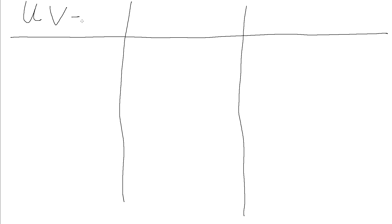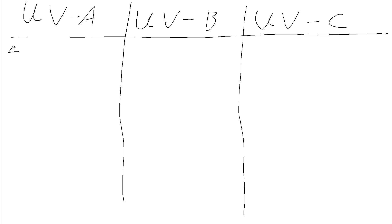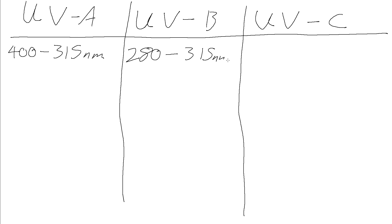So over here we have UVA, UVB, and UVC. Starting with the wavelengths in nanometres: UVA is taken to go from 400 to 315 nanometres. UVB goes from 315 down to 280 nanometres. And UVC goes from 280 down to 100 nanometres. This is all within the UV portion of the electromagnetic spectrum — we've just divided it into these different regions because they turn out to have slightly different properties.